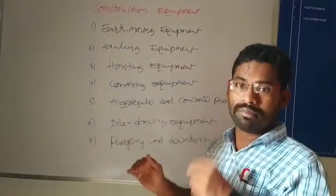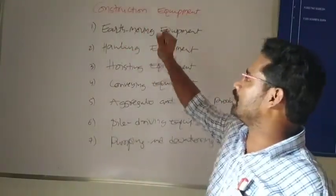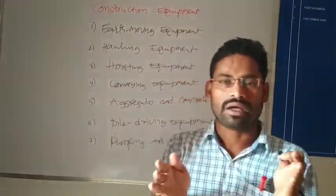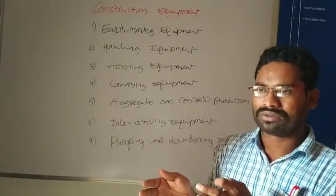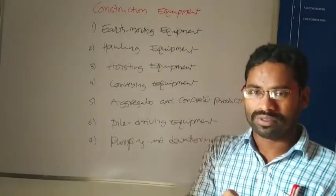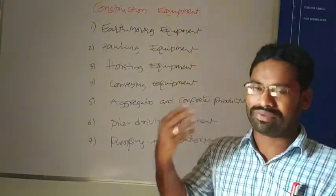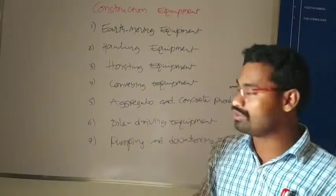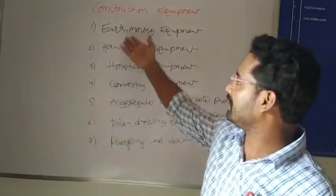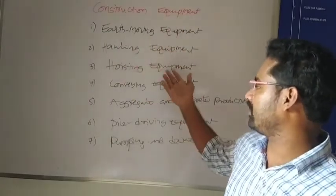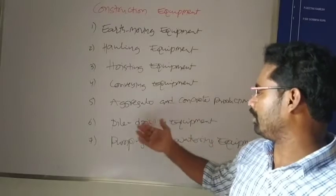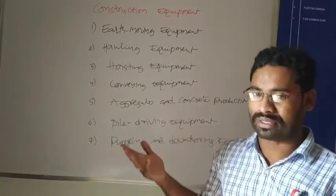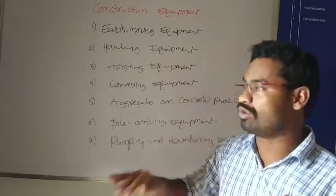In the present class, we are going to explain each classification in detail. While you are doing a construction project — whether long-term or short-term — there may be a need for different types of equipment. These include earthmoving equipment, hauling equipment, hoisting equipment, conveying equipment, aggregate and concrete equipment, pile driving equipment, and pumping and dewatering equipment.